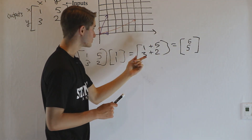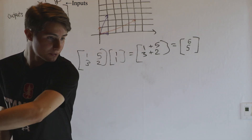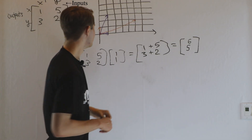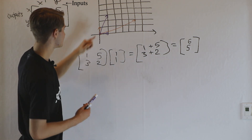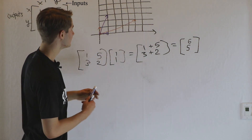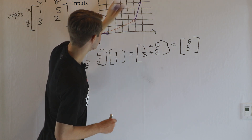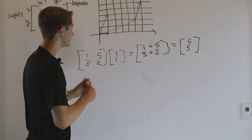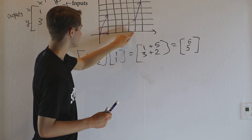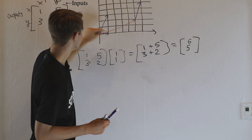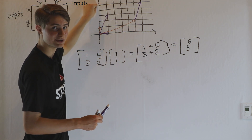And in fact, this corresponds to taking our coordinate plane and adding the two vectors tip to tail. We have vector [5, 2] right here. If we take [1, 3] and add it to [5, 2], we're going to get six as our x value and five as our y value.